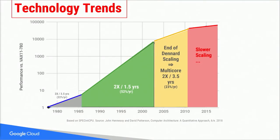Then we went into a phase of multi-core, multi-threaded platform systems along the lines of Amdahl's law. And now, in this recent phase, we see an era of slower scaling in technology trends. This is a challenging time for us in terms of technology trends.